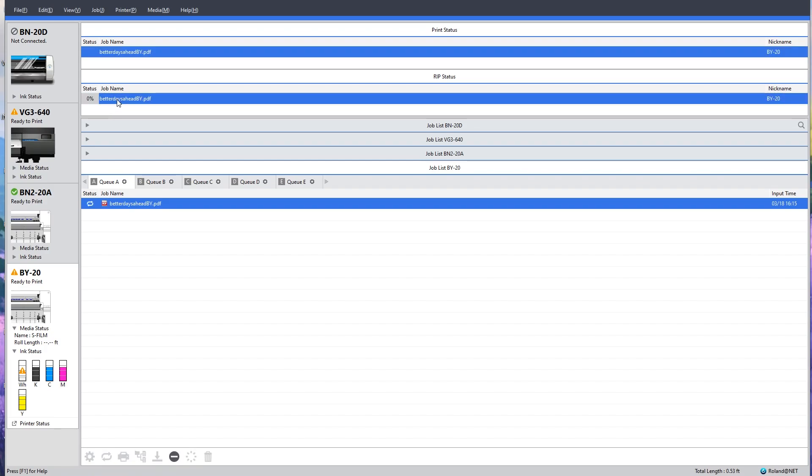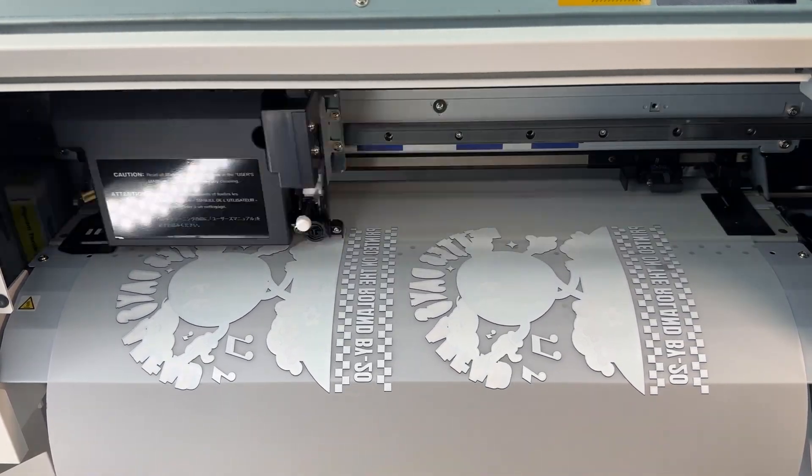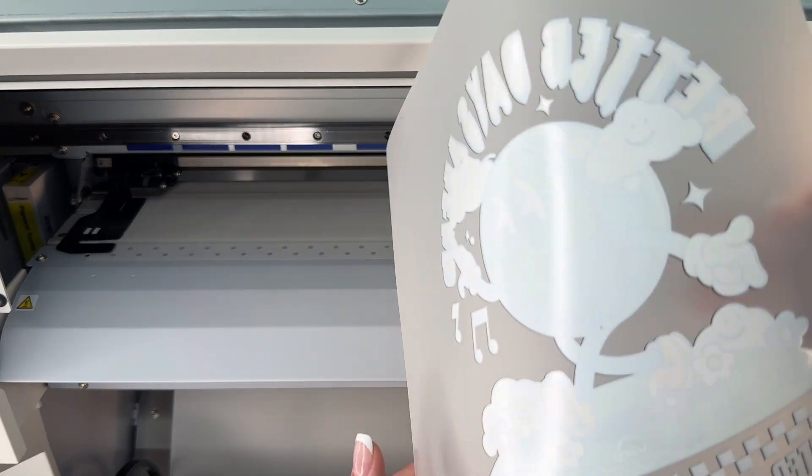Once I'm ready and I hit print, it's going to send it to rip first, and then once it's done ripping it'll immediately print. I could also just hit rip if I wanted it to just wait in the queue for me when I'm ready to print it again.